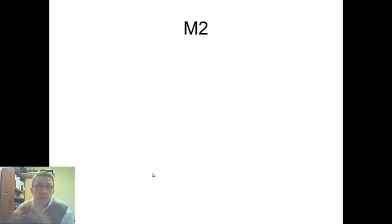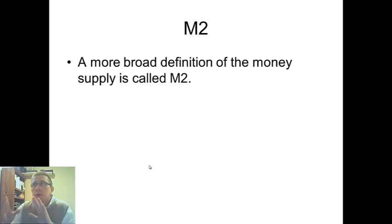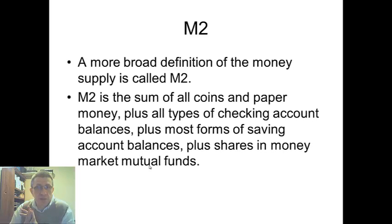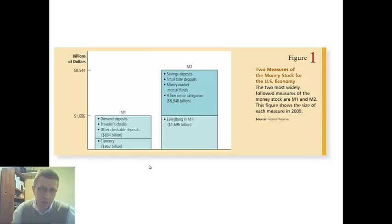M2 is the more broad definition. And really, it's what's used now more by officials to look at the money supply. This contains everything that M1 contained, plus most forms of savings account balances and shares in money market mutual funds. This is 2009, the numbers would change a little bit. But you have currency, checking deposits, travelers checks, other checkable deposits for M1.